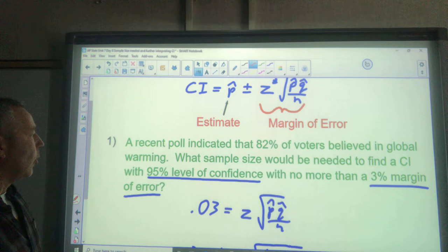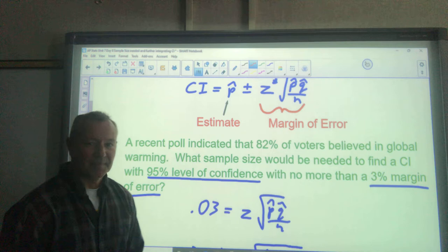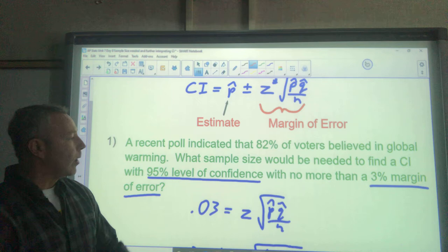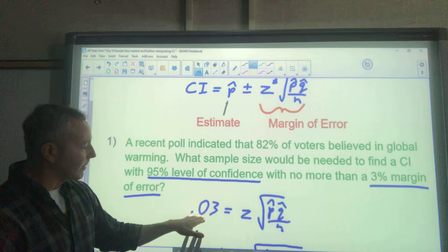In our problem here, it says that a recent poll indicated 82% of voters believed in global warming. What sample size would be needed to find a confidence interval with a 95% level of confidence with no more than a 3% margin of error?